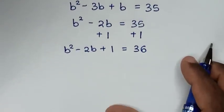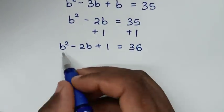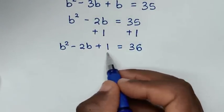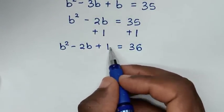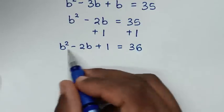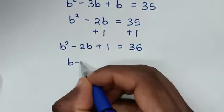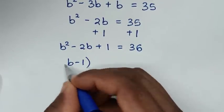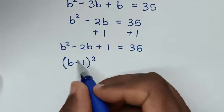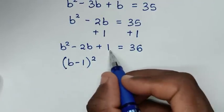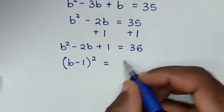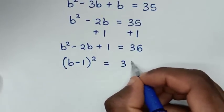From this quadratic equation, B squared minus 2B plus 1 is in the form of a perfect square. It is the same as (B minus 1) squared, which equals 36.